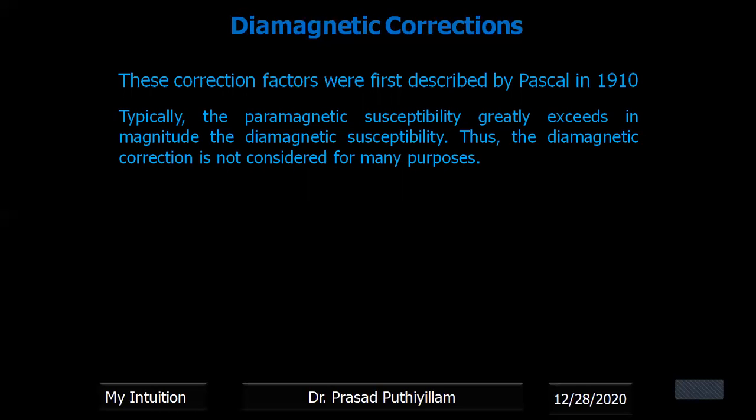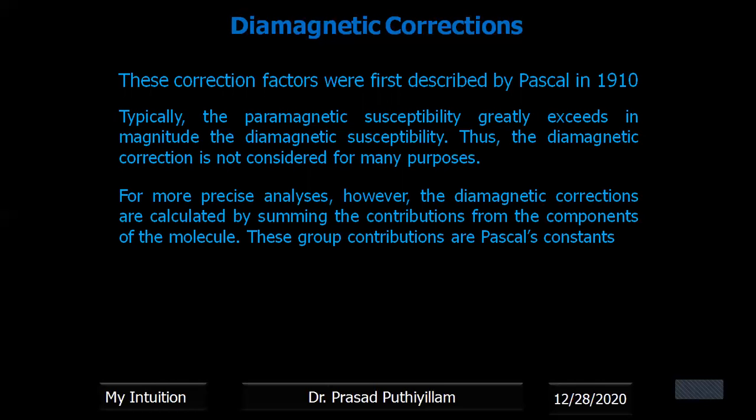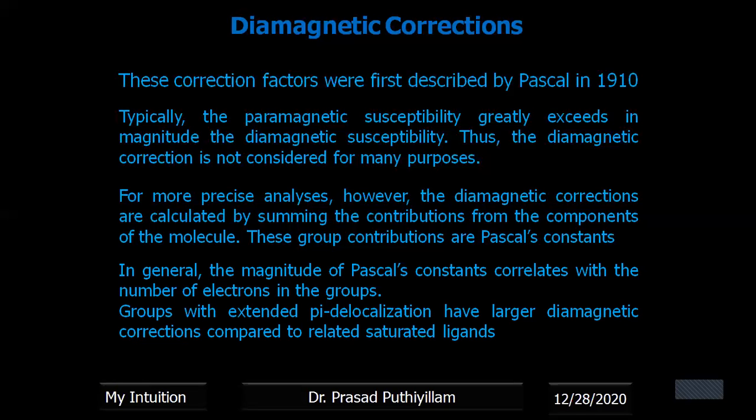So typically the paramagnetic susceptibility values are very high compared to diamagnetic susceptibility values or diamagnetic correction values. Therefore, in most of the cases the diamagnetic correction is not considered for its application or for calculating the magnetic momentum. But for precise analysis, for accurate analysis, if it is required, then we have to include the diamagnetic corrections, and we call these values as Pascal's constant.